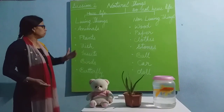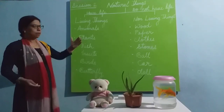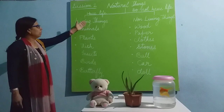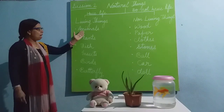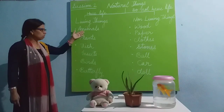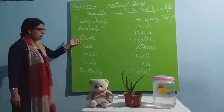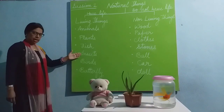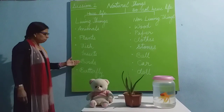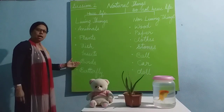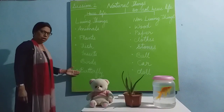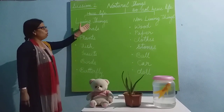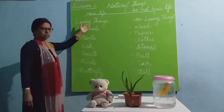For example, I have illustrated a few here. Living things include animals, plants, fish, insects, birds, and butterfly. These come under the category of living things.